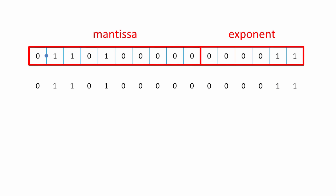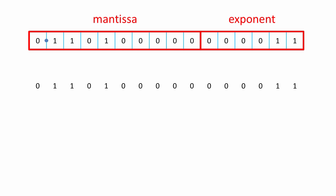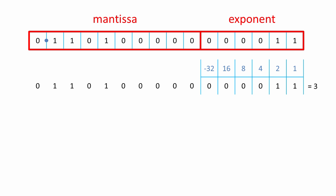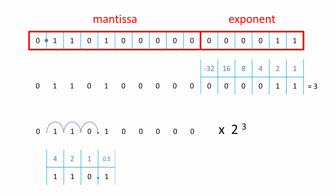To convert this number into base ten, first work out the value of the exponent in denary. In this case, it's positive three, so we have something times two to the power of three. Remember where the binary point is, and float it three places to the right. Here's the original number in pure binary — there's no need to concern yourself with the trailing zeros on the right-hand side; they're insignificant. Put this into a conversion gadget, and you'll arrive at 6.5 in base ten. Remember that this is a positive number, so the leftmost one has a positive place value — in this case four. The register contents therefore represent the denary value 6.5.